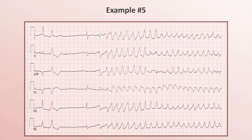Example 5. You may immediately notice that this strip has two distinctly separate rhythm issues. The first third is a bradyarrhythmia, but we are going to focus on just the other two-thirds.